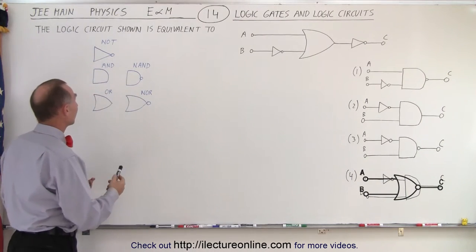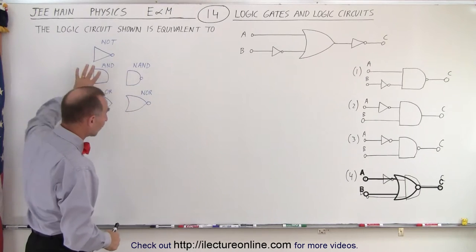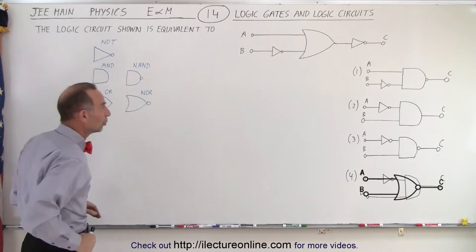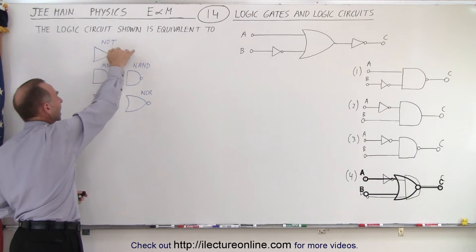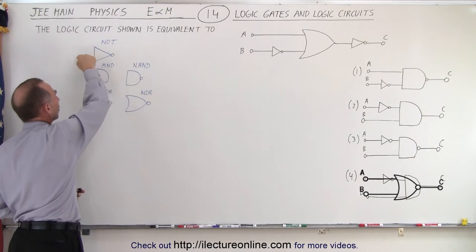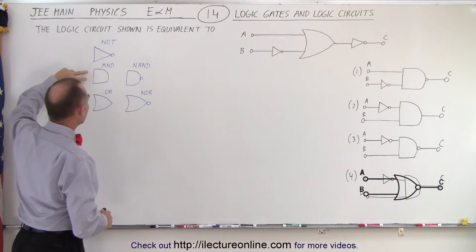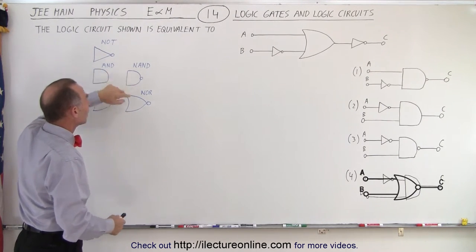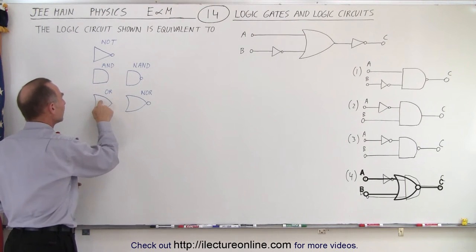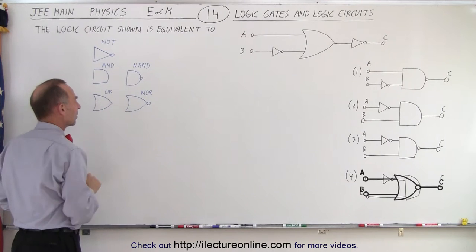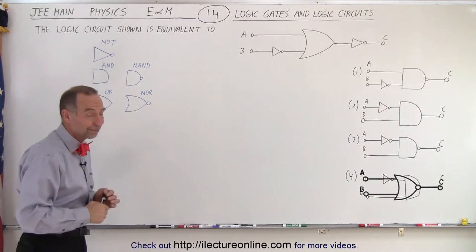Here we have the five gates that we should know: the NOT, the AND, the NAND, the OR, and the NOR. A NOT gate gives the opposite output — high in gives low out, low in gives high out. AND means both inputs must be high for a high output. NAND is the opposite of AND. The OR gate means one or the other must be high for a high output, and NOR is the exact opposite of OR.